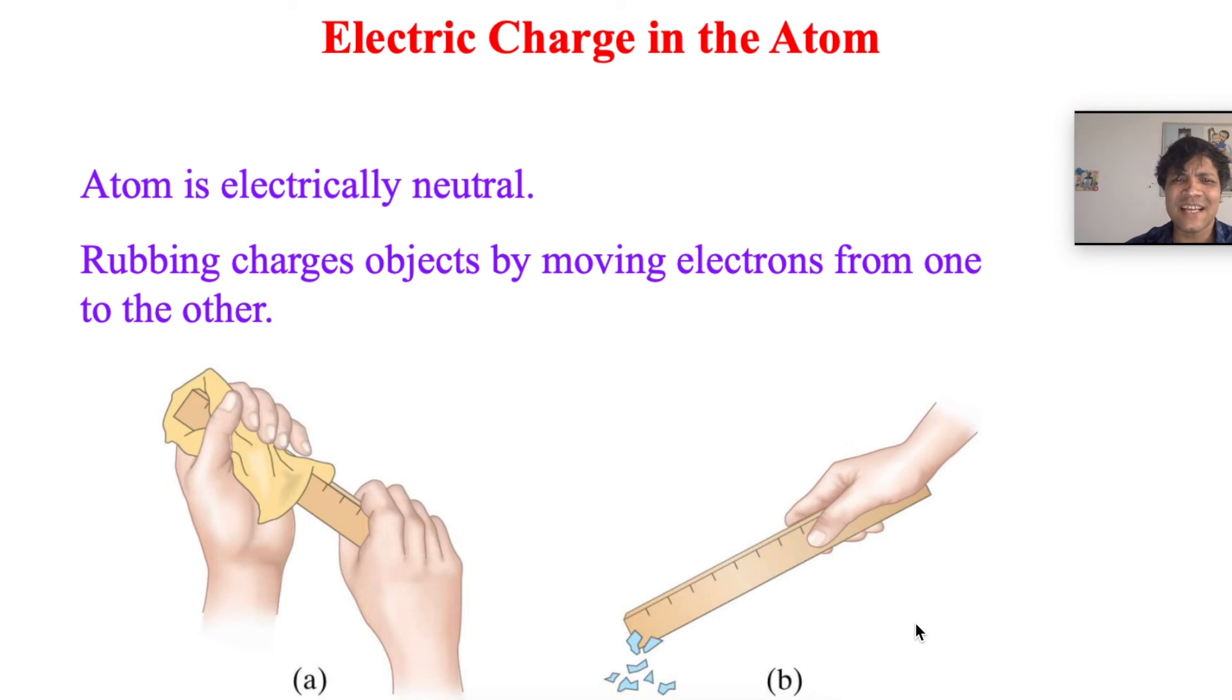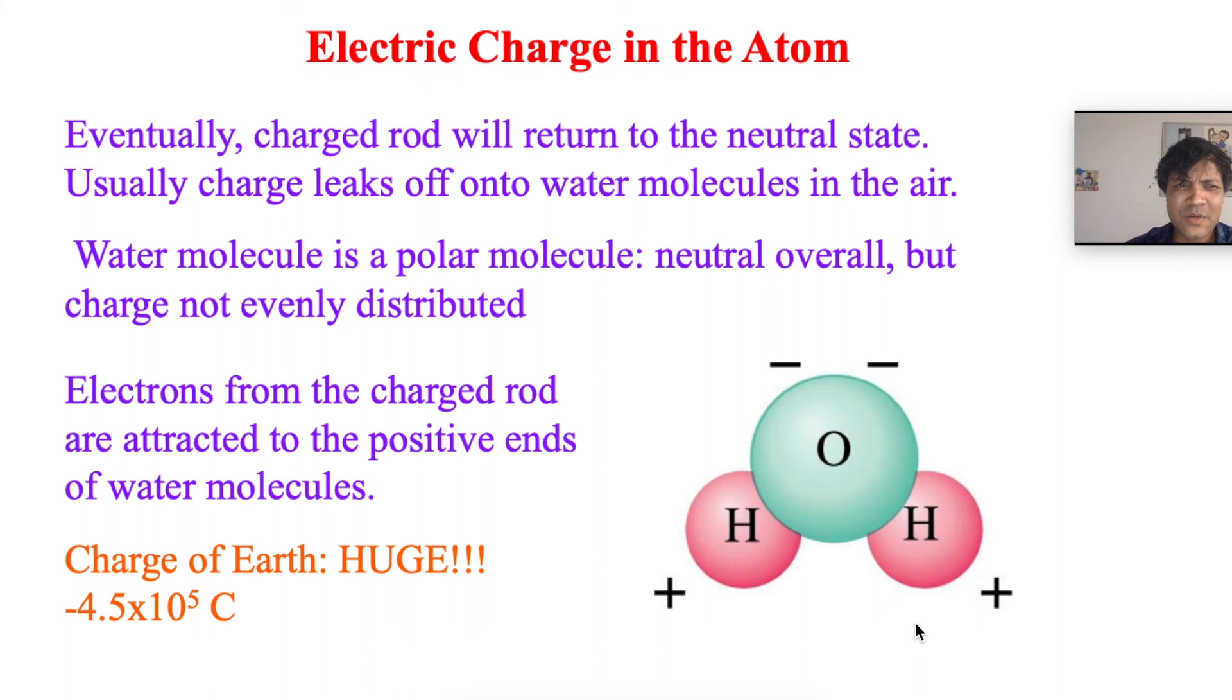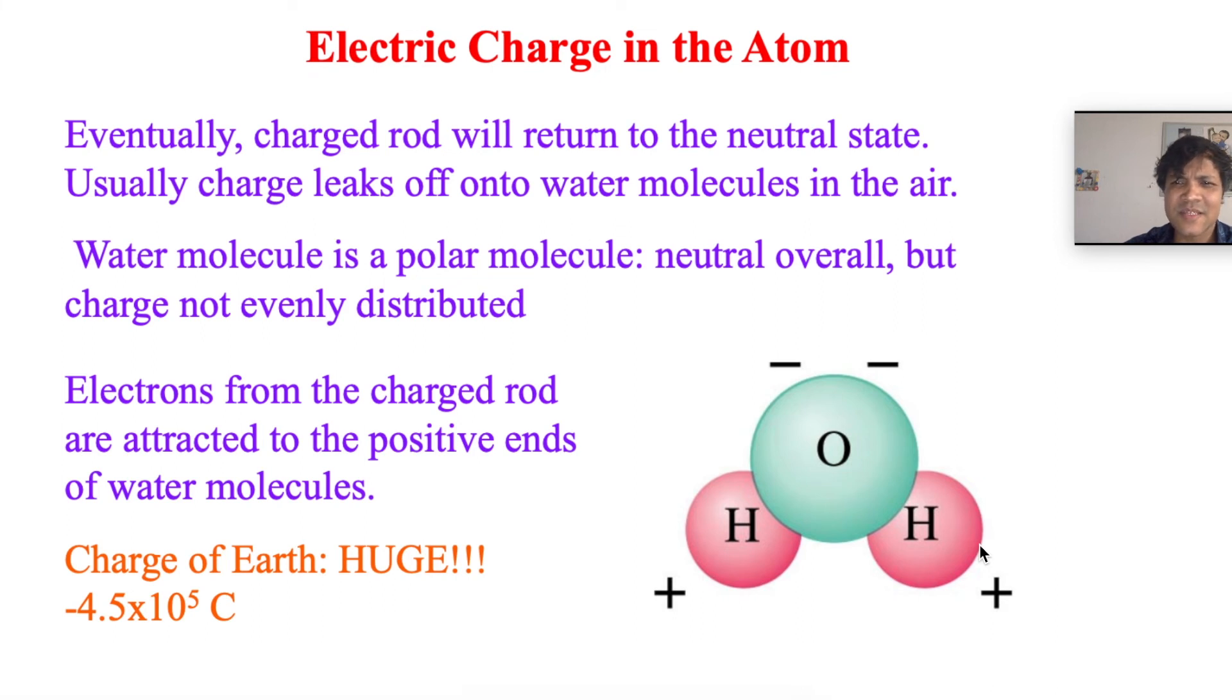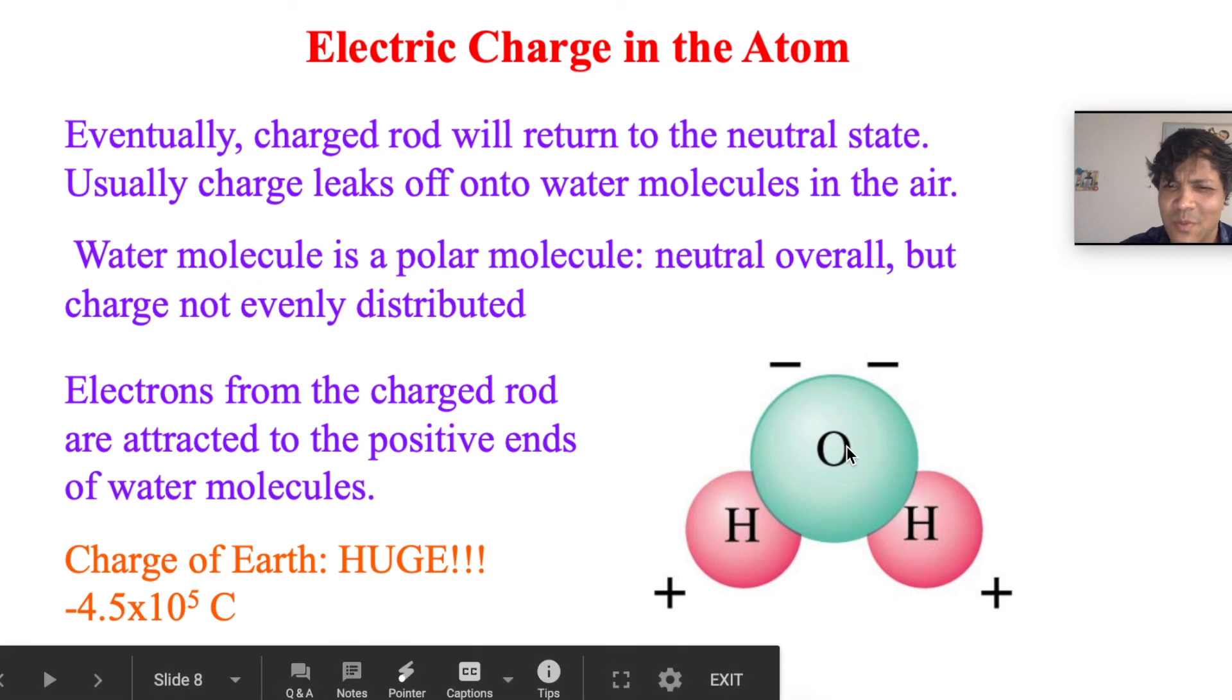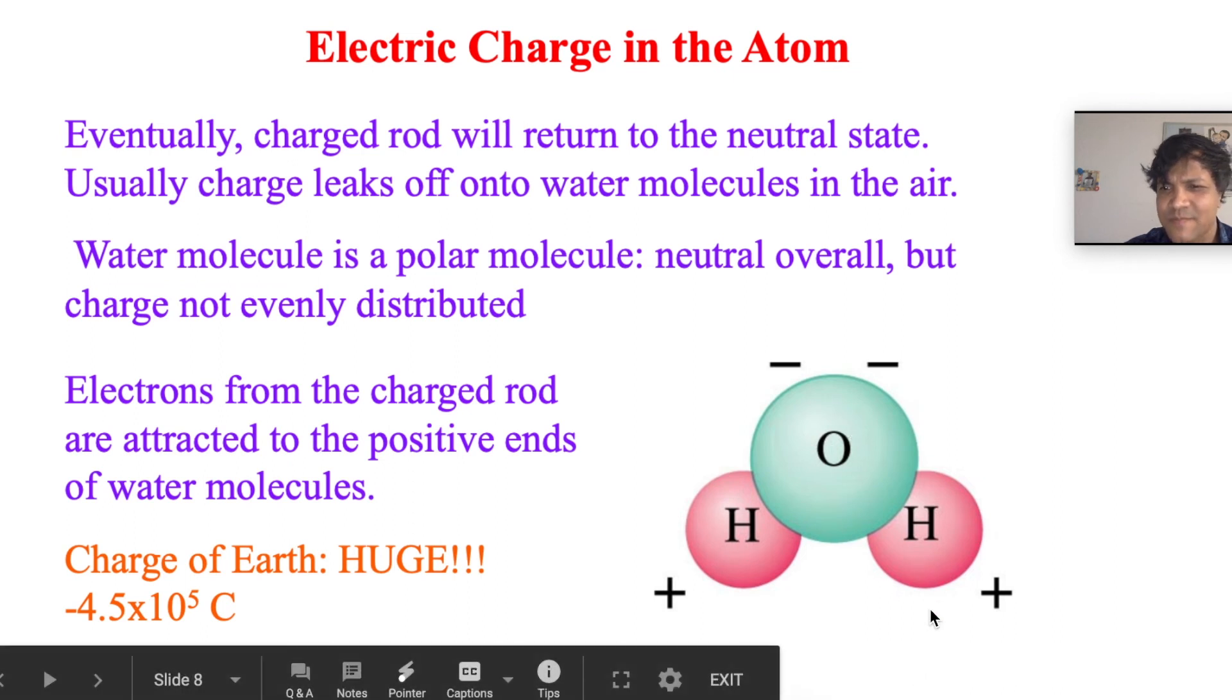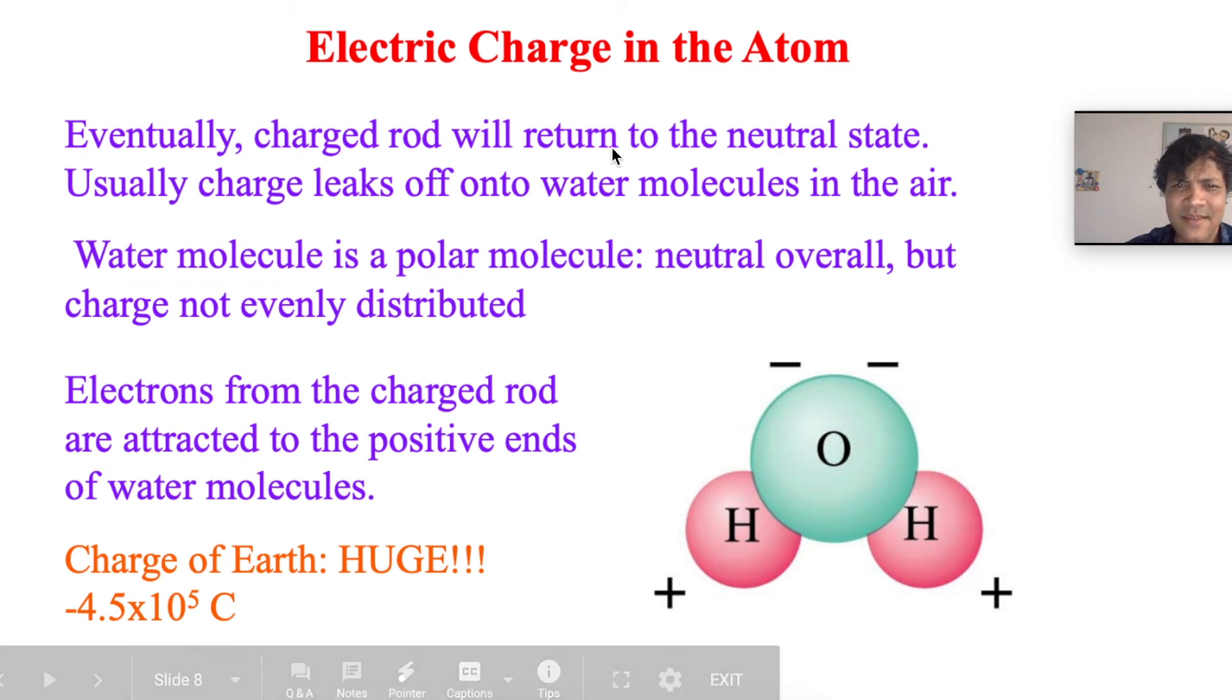The atom is electrically neutral. Rubbing charges objects by moving electrons from one to the other. Eventually, a charged rod will return to a neutral state because there are water molecules in the air. Water molecules are polar because the electronegativity of oxygen is greater than the electronegativity of hydrogen. Water molecules exist in the air and suck up the charge. Water molecule is a polar molecule - neutral overall, but charge does not evenly distribute.